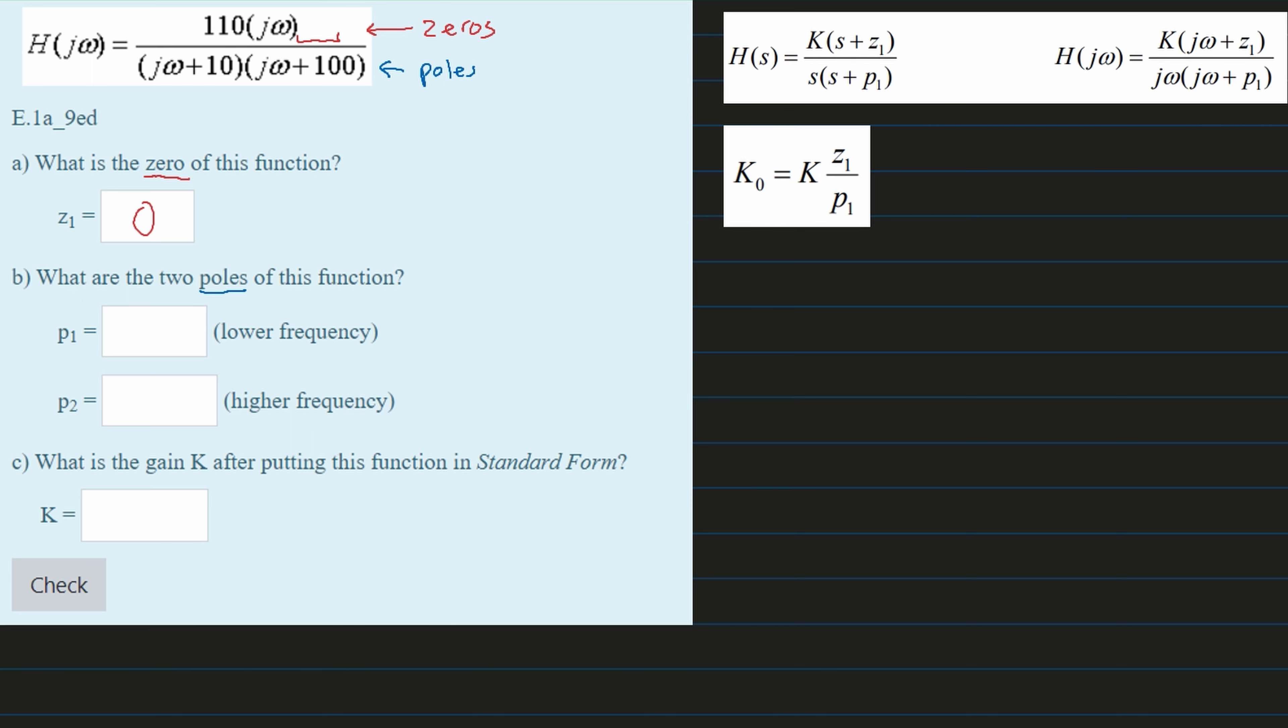Now for our p1, we're going to be dealing with this. And the reason why we're dealing with this is because this 10 is less than this 100. So let's write this all out. Both of our poles are going to be 10 and 100 because we're grabbing this value and this value.